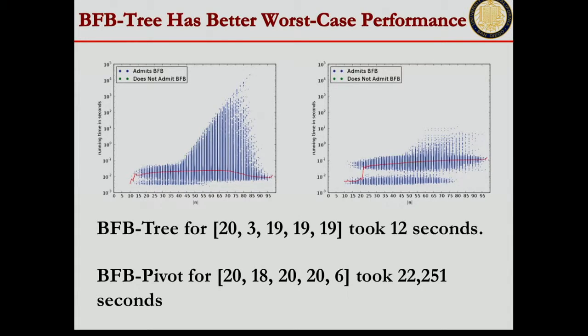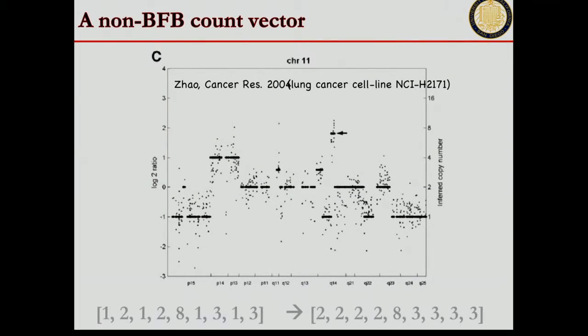The only problem is if you have errors. If you allow edit distances from true count vectors and find the nearest BFB, these methods don't work. They can't distinguish, except in some cases they can say the nearest count BFB vector is so far away that this is not an expression of a BFB. It's a non-trivial problem.